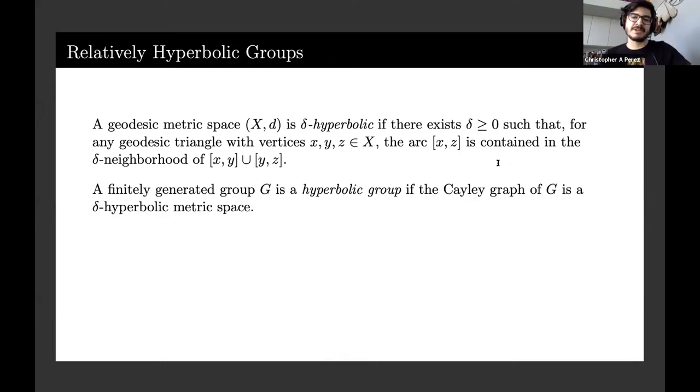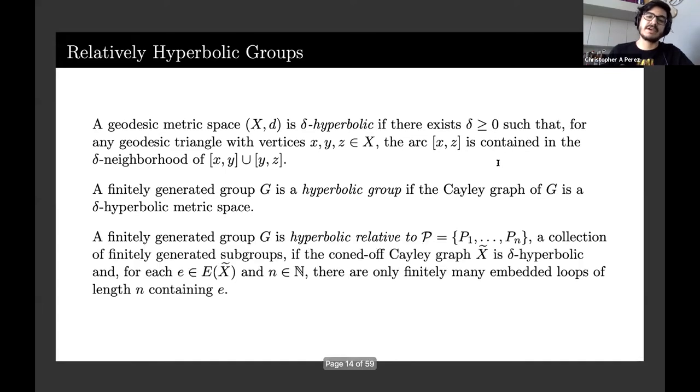A finitely generated group G is hyperbolic if the Cayley graph is a delta hyperbolic metric space. Similarly, a finitely generated group is hyperbolic relative to a collection of finitely generated subgroups if the corresponding coned off Cayley graph is a delta hyperbolic space. We have this other condition that for each edge and for each n, there are only finitely many embedded loops of that length n containing e. This is the bounded coset penetration property.